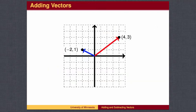We often are asked to perform two motions, one following the other. Where do we wind up if we first follow the red vector, going right 4 and up 3, then perform the blue vector, going left 2 and up 1?